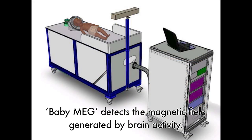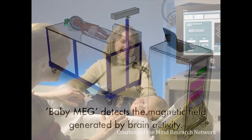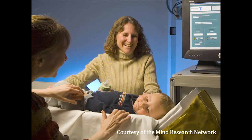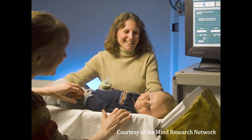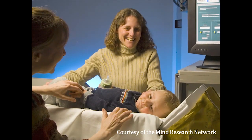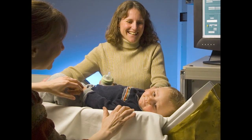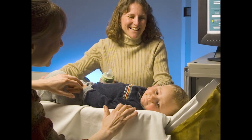Magnetoencephalography, instead of looking at consumption of a fuel neurons use — like in NIRS — we use it to measure the actual fluctuations in magnetic fields caused by electrical neural activity. Currently, only adult head-sized systems exist. With funding from the National Science Foundation, we are building the first MEG optimized for kids up to three years of age, which we call the Baby MEG. The Baby MEG will allow us to detect and localize neural activity to better understand how neurons begin to work together to perform important cognitive functions.